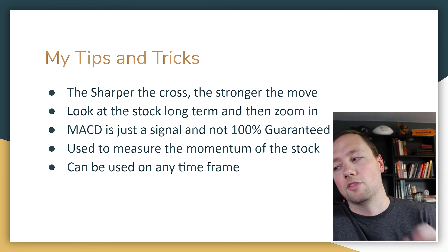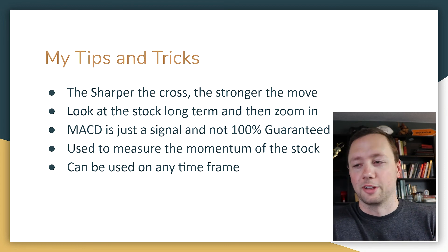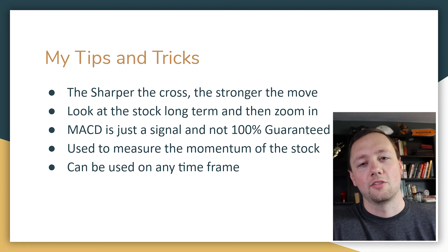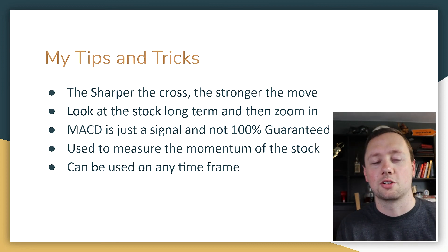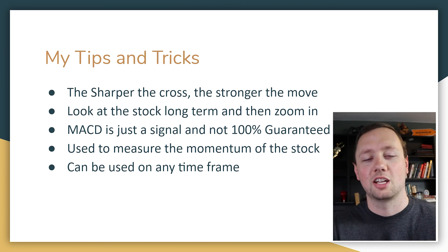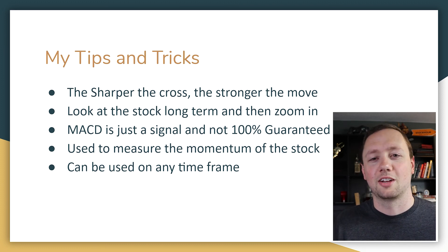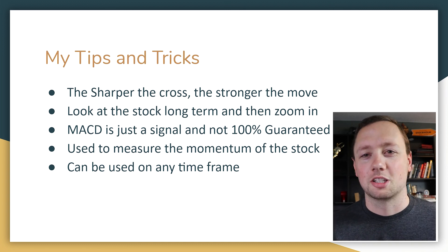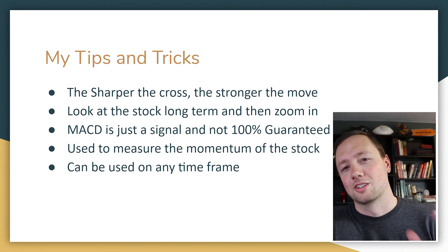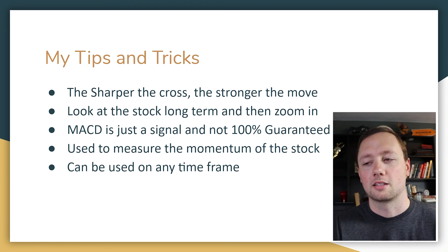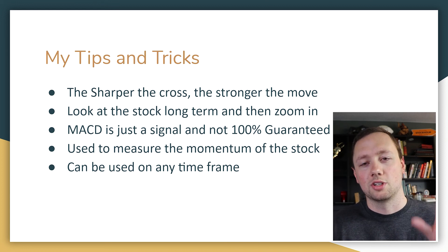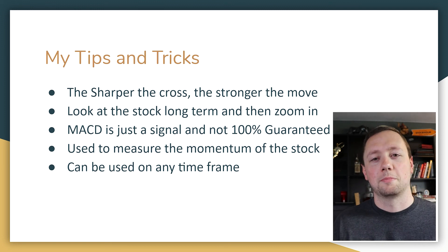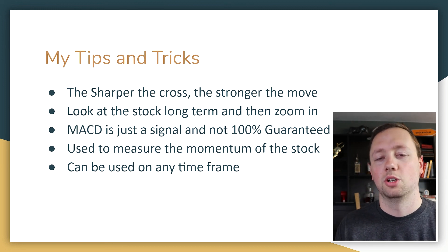Fourthly, the MACD is used to measure the momentum of the stock — how strong the upward and downward pressure is based on price action — and to identify changes in trend. It is not used for anything else. You cannot use it as the ultimate indicator. It is just a small tool on your tool belt to help you make the best decisions. The nice thing about the MACD is it can be used in any timeframe — day trading, swing trading, long-term investing — just adjust the time period and it will work the same way.